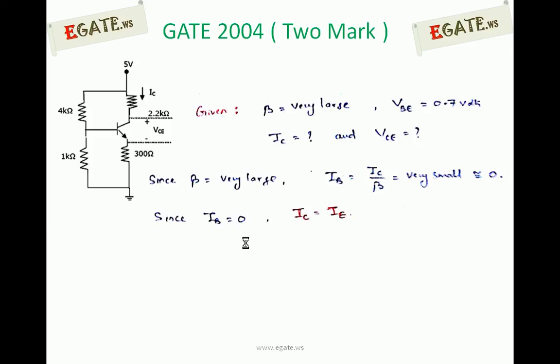So the same current which is flowing through 2.2kΩ is also flowing through 300Ω. That is the meaning. So if you calculate current flowing through 300Ω, that is nothing but current flowing through 2.2kΩ, which is nothing but IC.